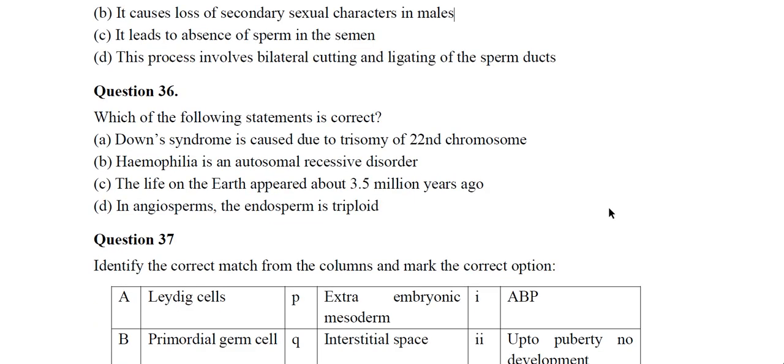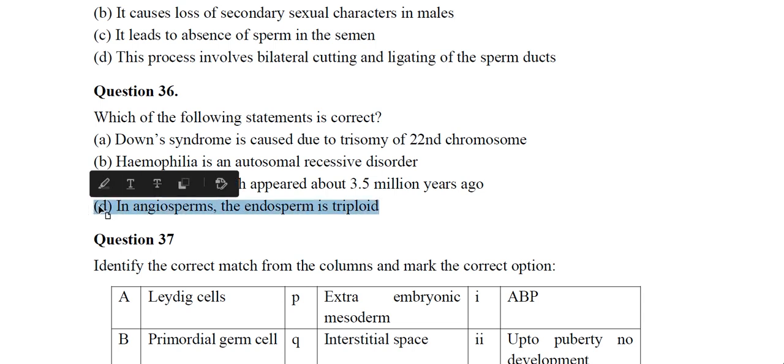Question 36: Which of the following statements is correct? The correct answer is: in angiosperms, the endosperm is triploid.